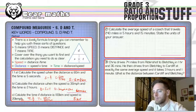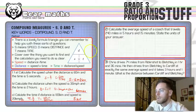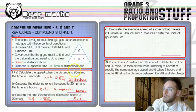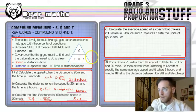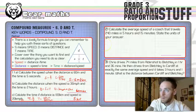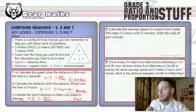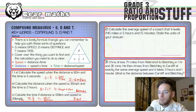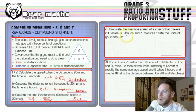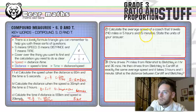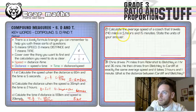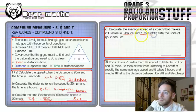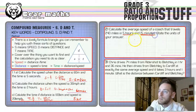There's our three basic speed, distance, and time calculations. Nothing too complicated. In number two, we get a bit of context. Calculate the average speed of a coach that travels 240 miles in 5 hours and 15 minutes. State the units of your answer. I want to show you how you can do these calculations on a calculator because it's useful. We've got a mixture of units here: 5 hours and 15 minutes.